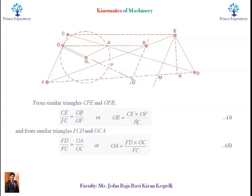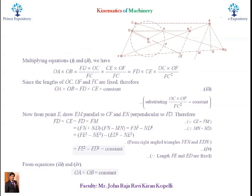Let this O-A be equation number 2 and O-B be equation number 1. So multiply these two equations 1 and 2. After multiplying, we will be getting F-D into C-E into O-C into O-F by F-C square. Observe very carefully. Since the lengths of O-C, O-F, and F-C are fixed, therefore O-A into O-B is equal to F-D into C-E into constant.